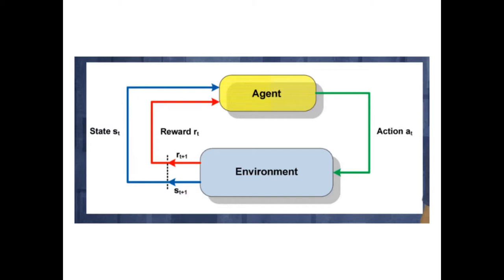In Reinforcement Learning, an agent A interacts with an environment E through a set of discrete or continuous actions. The environment E returns environment state updates S and rewards R. The goal of agent A is to maximize the sum of the rewards.